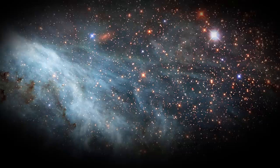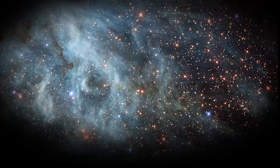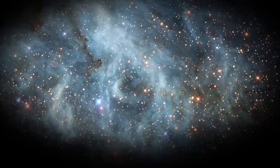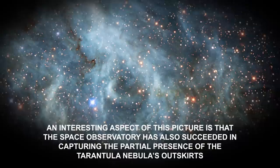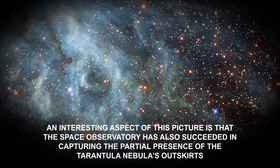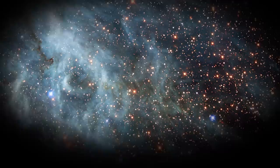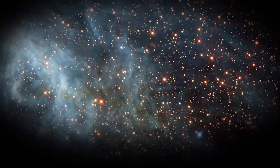Number 5: The Glittering Large Magellanic Cloud. This image is that of the Large Magellanic Cloud, which is a mini-galaxy that moves around our galaxy, the Milky Way. This image gives a clear view of the gas clouds and luminous stars. An interesting aspect of this picture is that the Space Observatory has also succeeded in capturing the partial presence of the Tarantula Nebula's outskirts. Its beauty is already reflected in this image. Astronomers can finally learn more about the star-forming galaxies of the Universe by taking cues from this high-quality image captured by the Space Observatory.